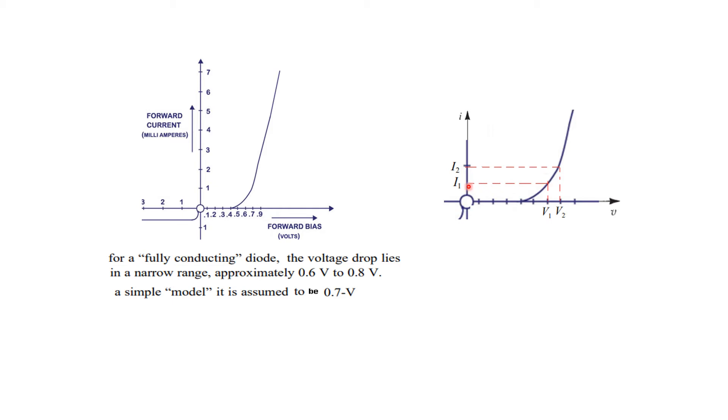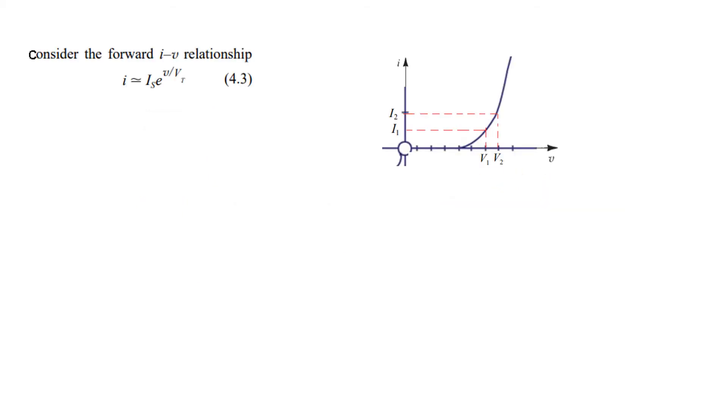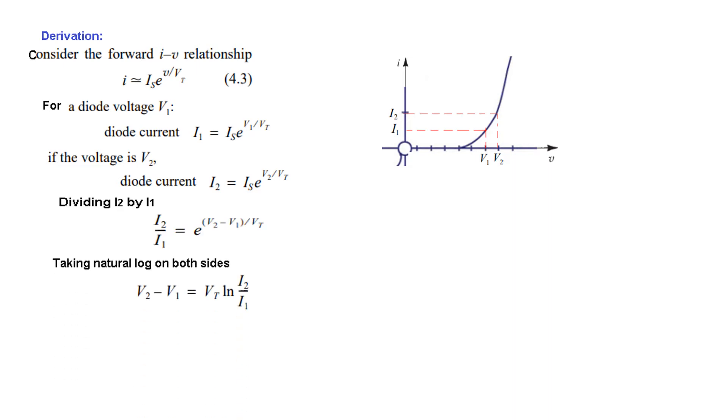The voltage is V1 and V2. I1 is equal to Is e to the V1 over Vt. V2 is given by this equation: I2 over I1. Dividing I2 by I1, we have a formula. Taking natural log on both sides, V2 minus V1 equals Vt ln(I2 over I1).